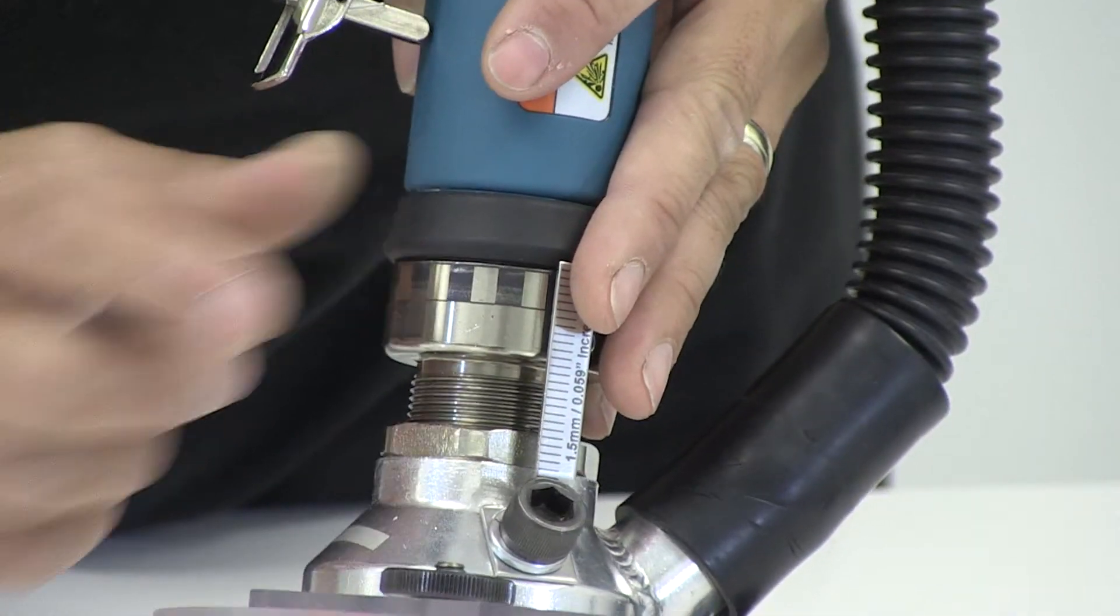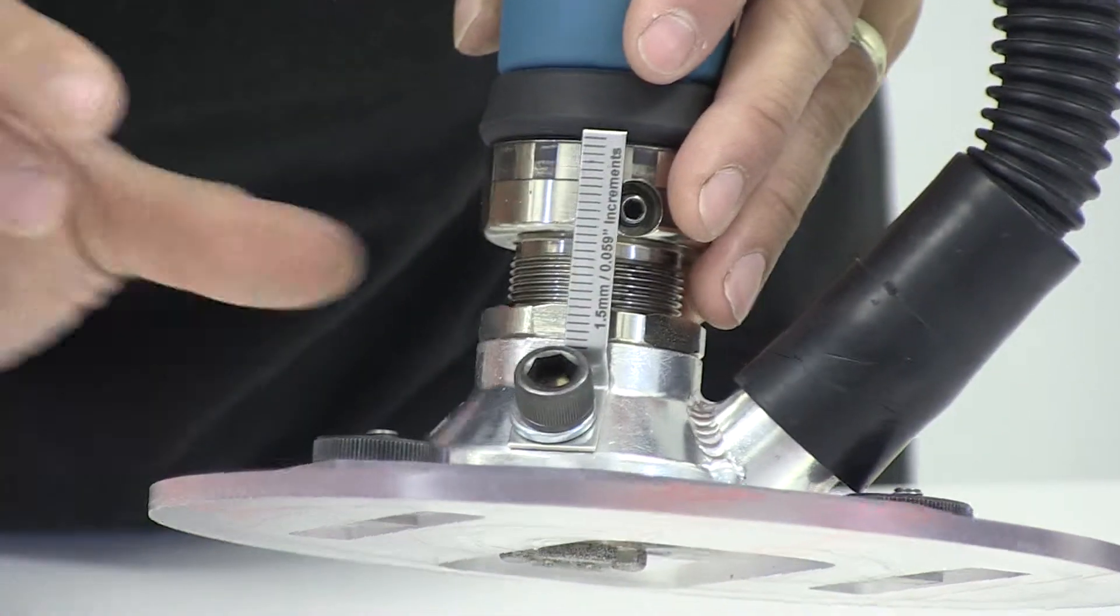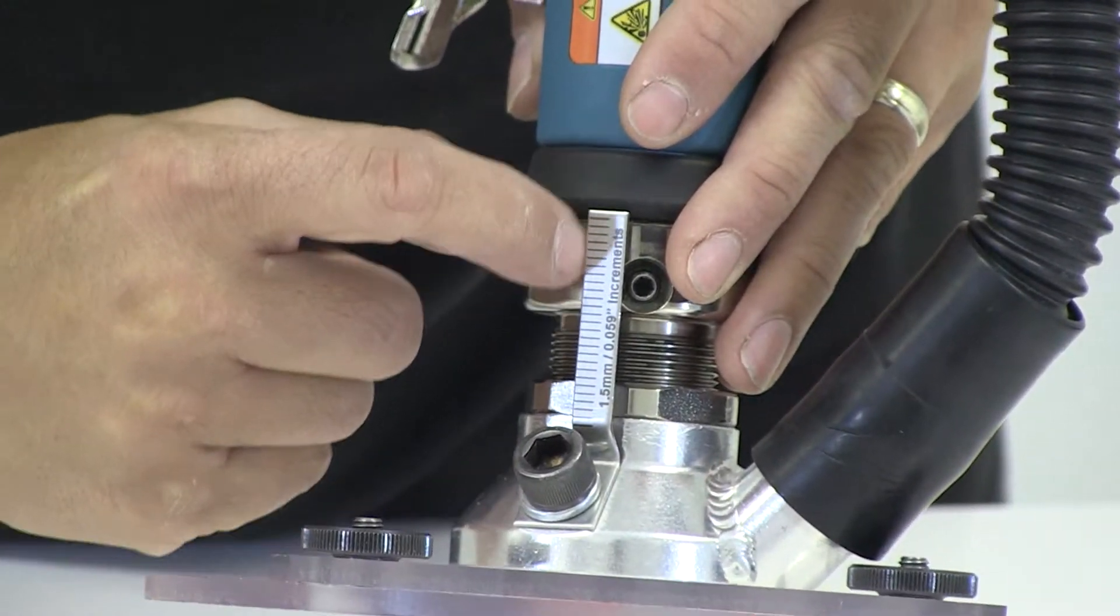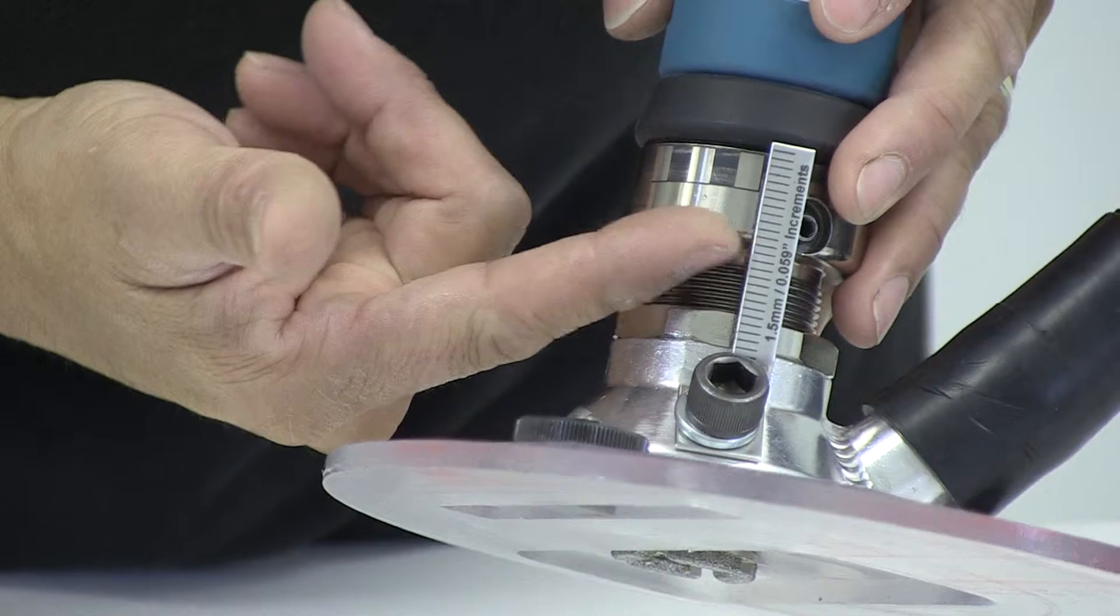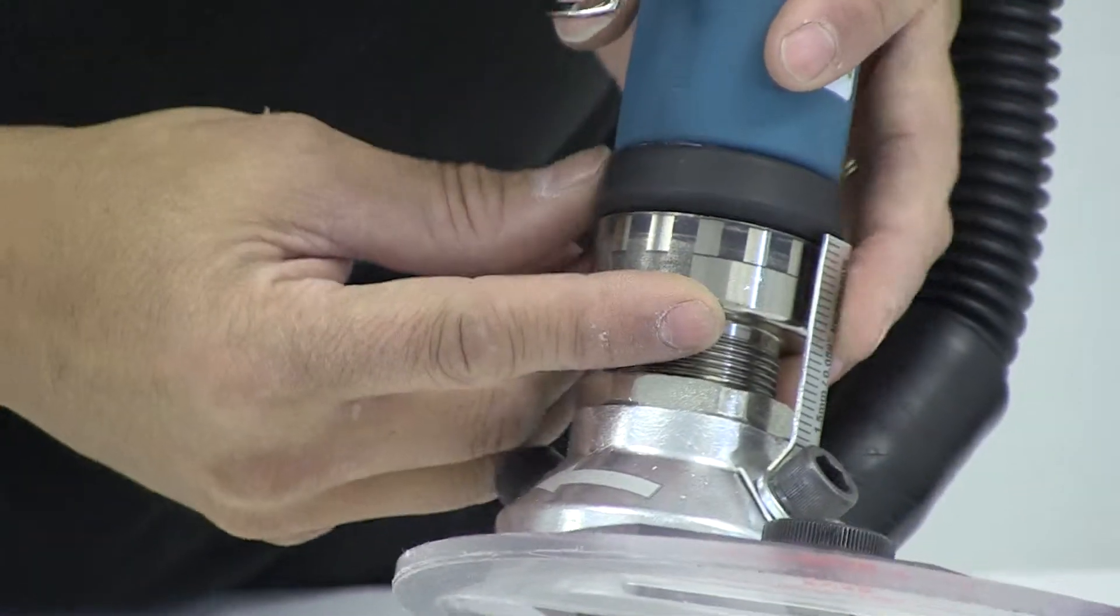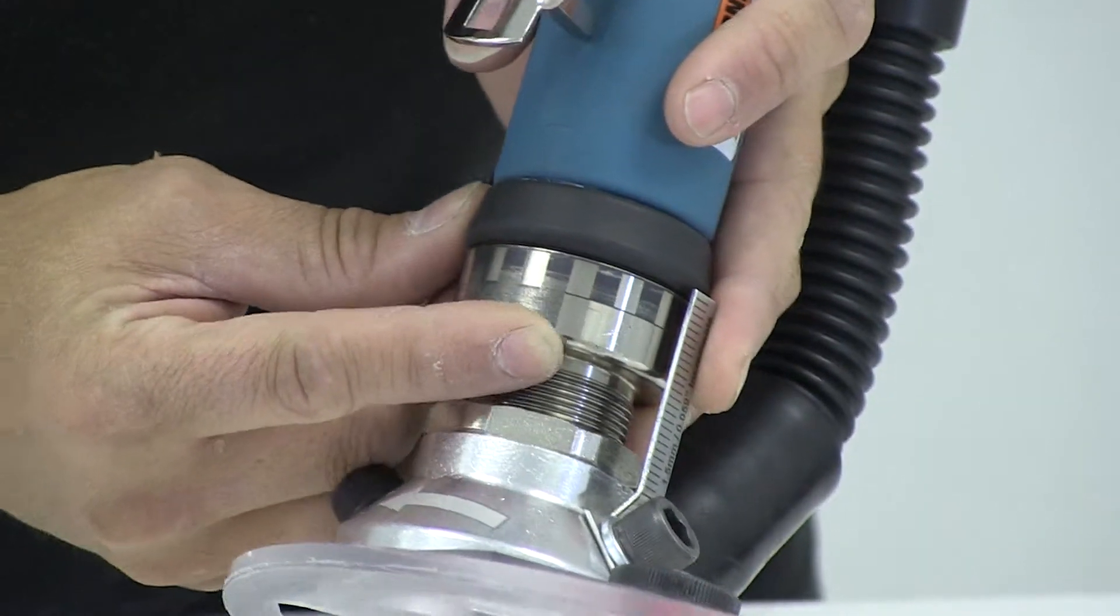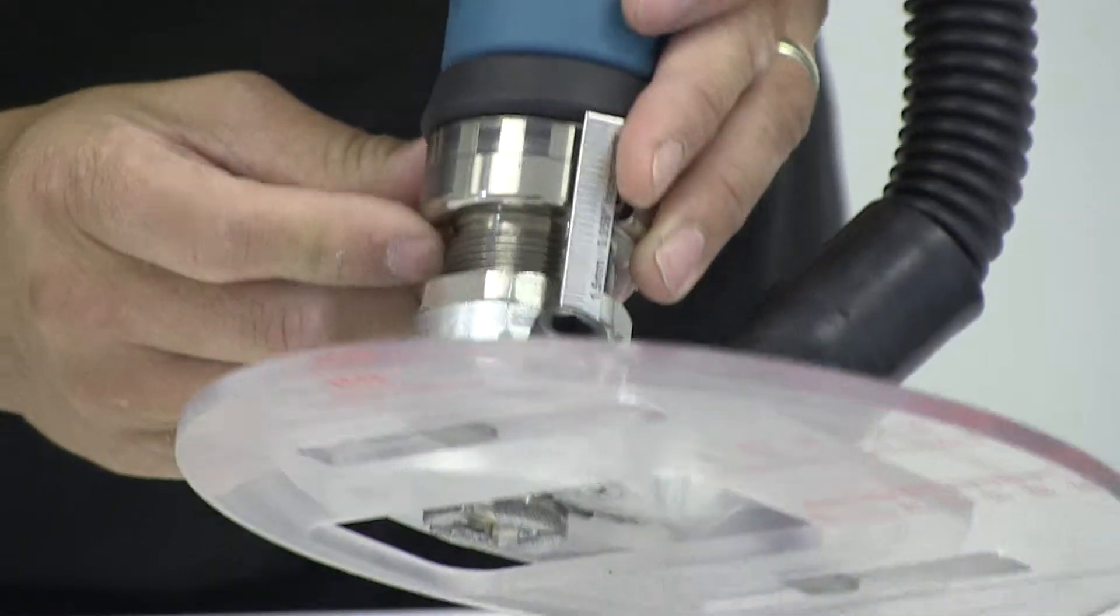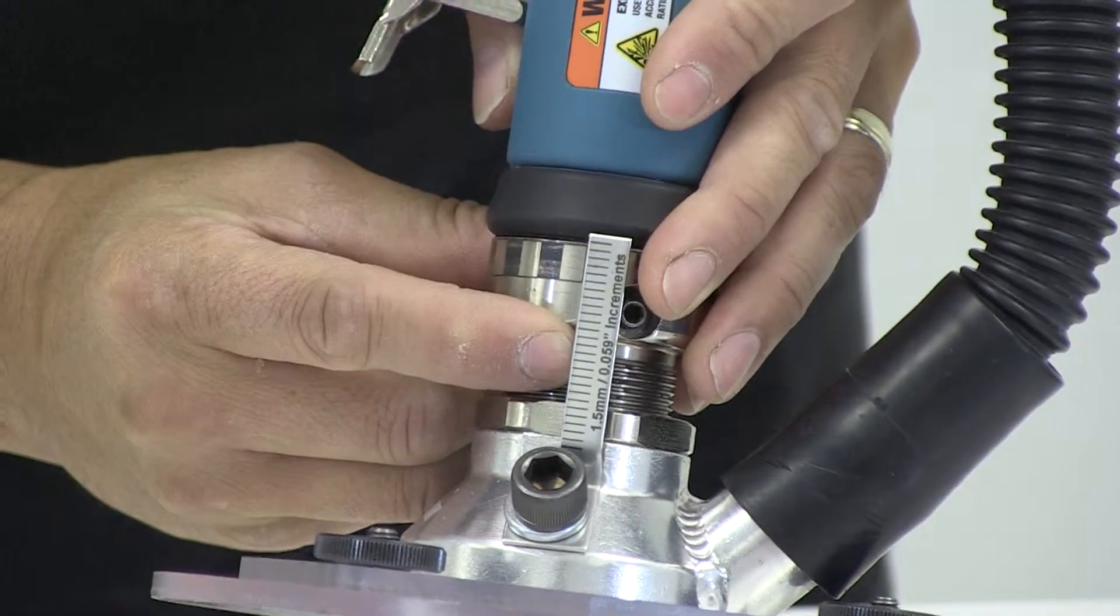Each increment is a small movement of the thread, and we align it with this edge of the vertical pointer. The lower scale is every 5 of the smaller increments and represents 0.25 millimeters, a quarter of a millimeter, or 10 thousandths of an inch.